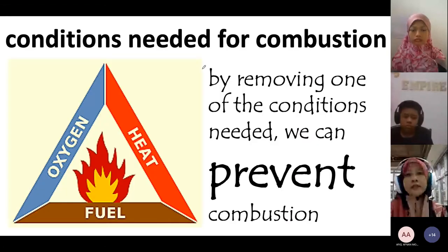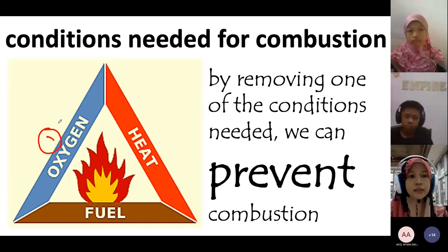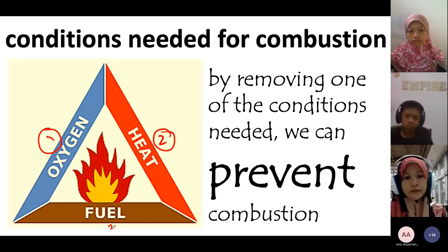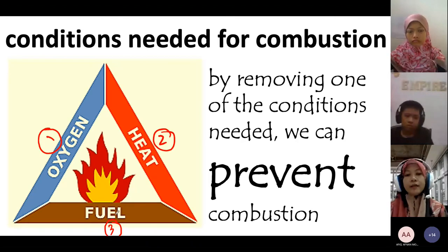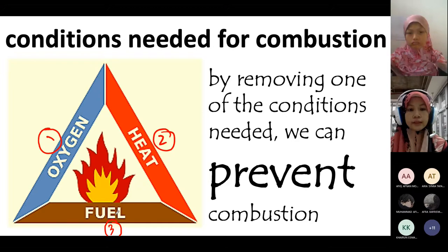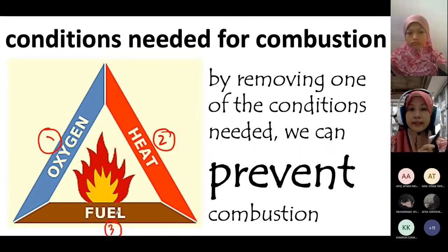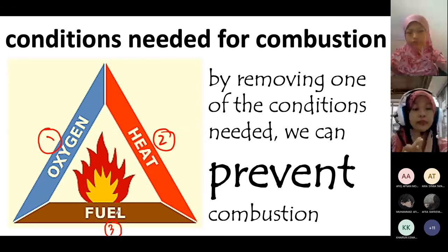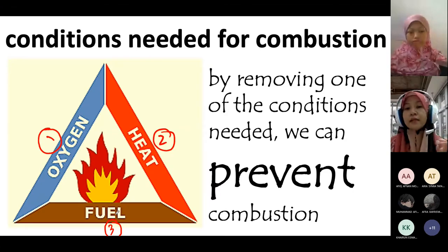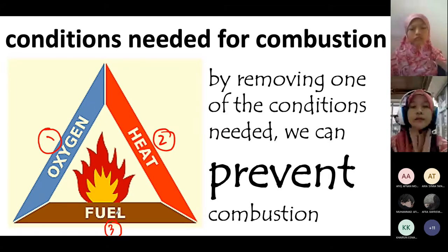So these are the conditions needed for the combustion process: mesti ada oxygen, mesti ada heat, dan juga mesti ada fuel. Fuel adalah bahan untuk kita bakar. Examples of fuels: kalau kita ada wood — boleh. Kalau kita ada petrol — boleh. LPG, liquefied petroleum gas — pun boleh terbakar. Paper — boleh terbakar. Semua substance that can be burned. Tapi ada certain-certain substance. Bukan semua substance can be burned.